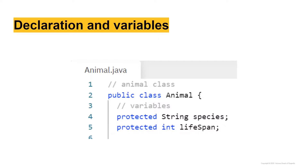Within the opening bracket I have a comment for my variables. The variables here are a protected String called species — not initialized — and a protected int called lifespan. I want these protected because I plan on deriving other classes from the animal class. You can have different types of animals, so I might want to derive the information from an animal class and put it into a more specific class, like a fish class or a giraffe class.